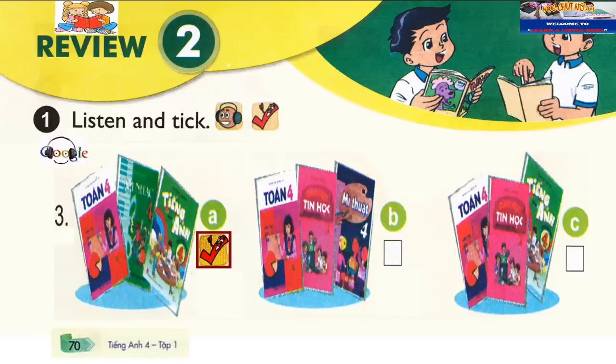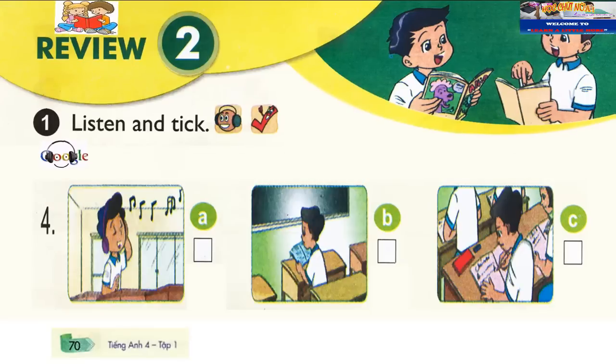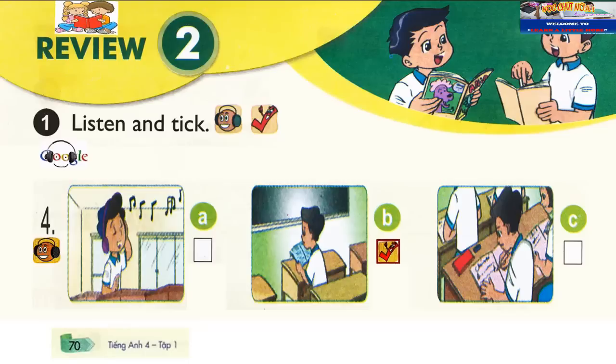4. Where's Nam? He's in the classroom. What's he doing? I think he's reading a book.